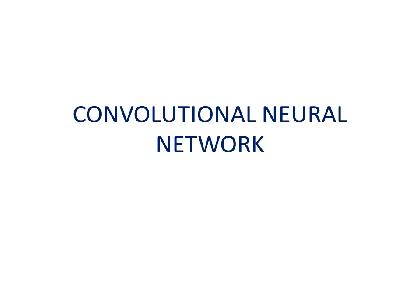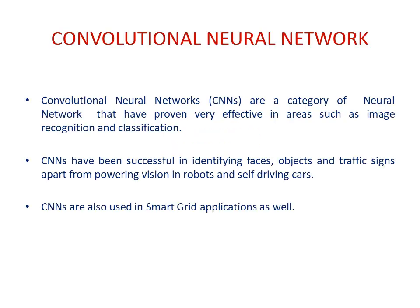Hello everyone, welcome to the Power and Energy channel. In this video I'll share something about convolutional neural networks. A convolutional neural network is a kind of neural network which is doing a phenomenal job in image classification and image recognition. It has also been successful in face detection, object detection, and traffic sign identification problems, which also power computer vision in robots and self-driving cars.